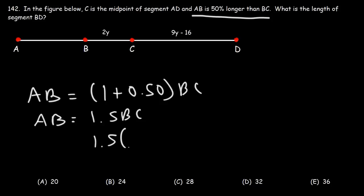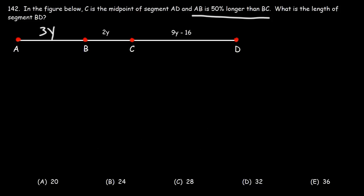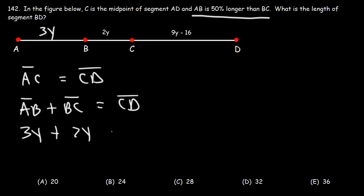BC equals 2y based on the figure, so AB is 1.5 times 2y, which means AB equals 3y. Our goal is to find the length of segment BD, so if we can calculate y, we can do that. C is the midpoint of segment AD, which means AC equals CD. AC is the sum of AB and BC: 3y plus 2y equals 5y, and CD is 9y minus 16.